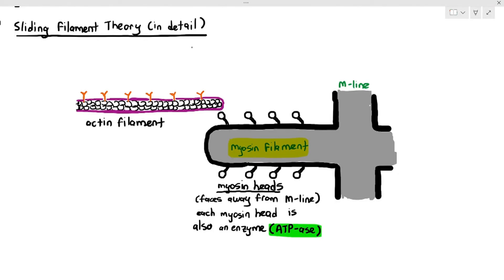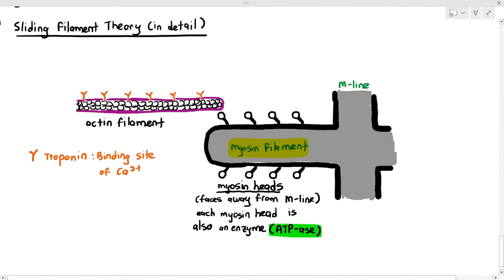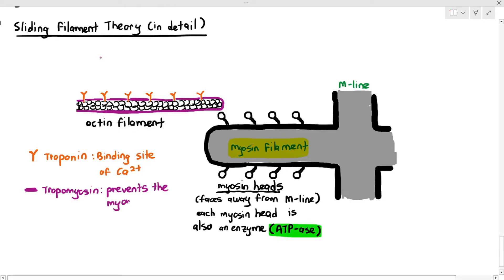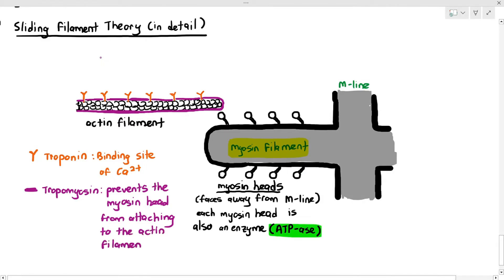I'm taking out just one section of the actin filament and one section of the myosin filament to see it in detail. As a reminder, the actin filament is the thin filament containing actin proteins shown as small circular shapes. It has Y-shaped structures called troponin, which act as calcium ion receptors, and there are purple structures covering the actin filament — those are not the actual colors, so don't worry about that.